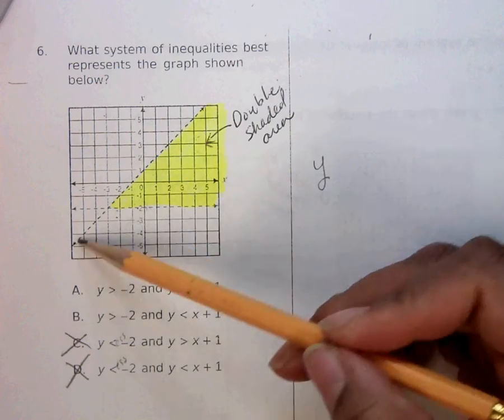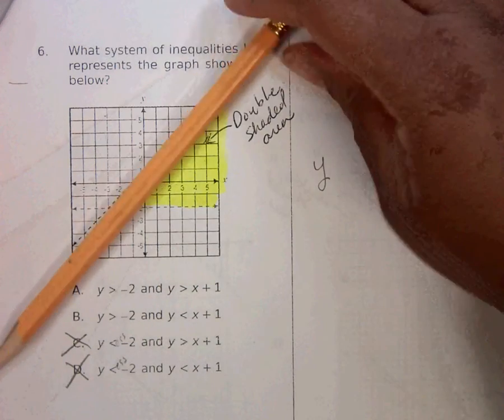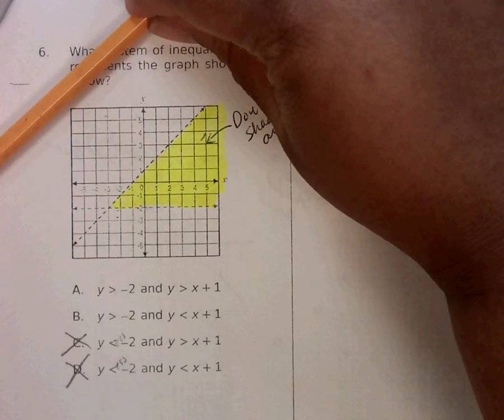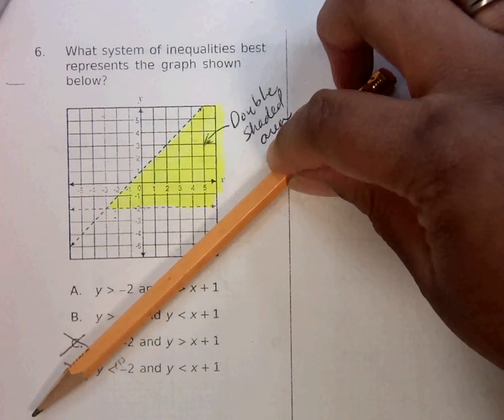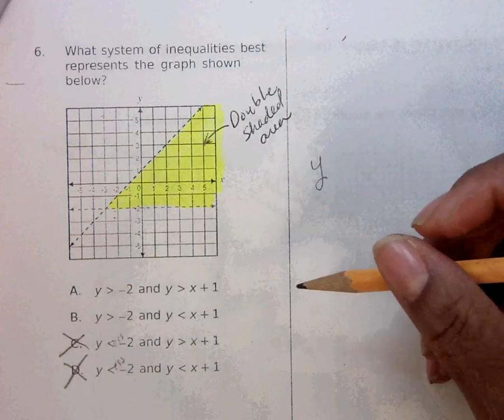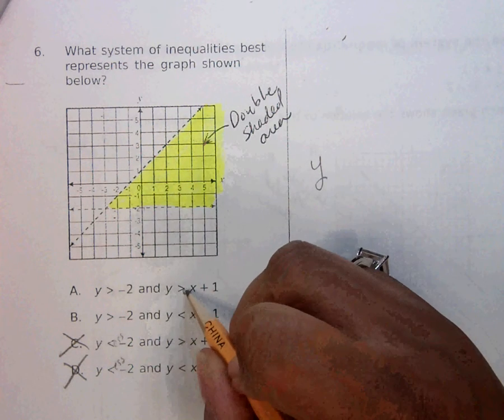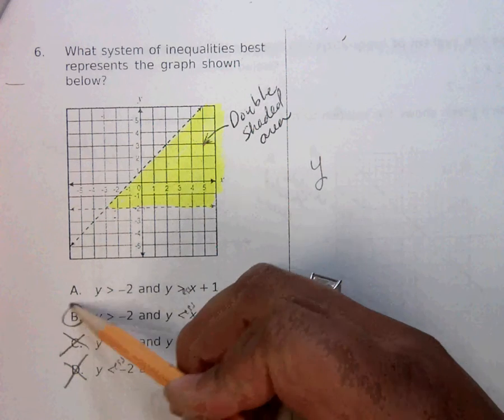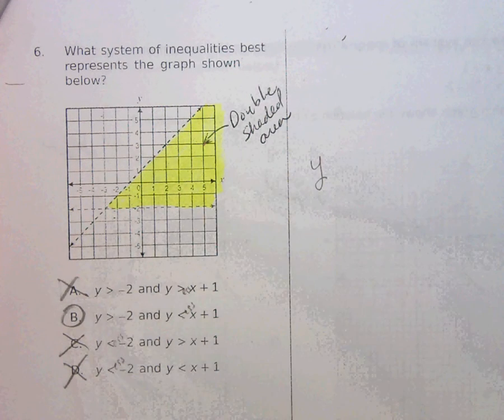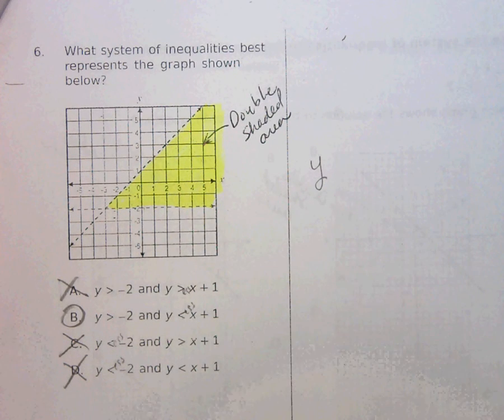So then we go to this line. We lay our pencil down. Did it go up or did it go down? It went down. So we need less than. And that's not less. There it is, that's less. There's the answer. You can also graph it in the calculator and see if you get the right answer. But I'm going to move on.